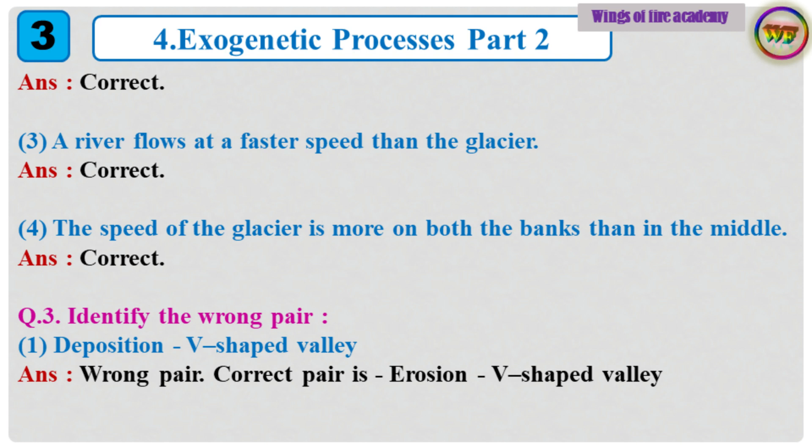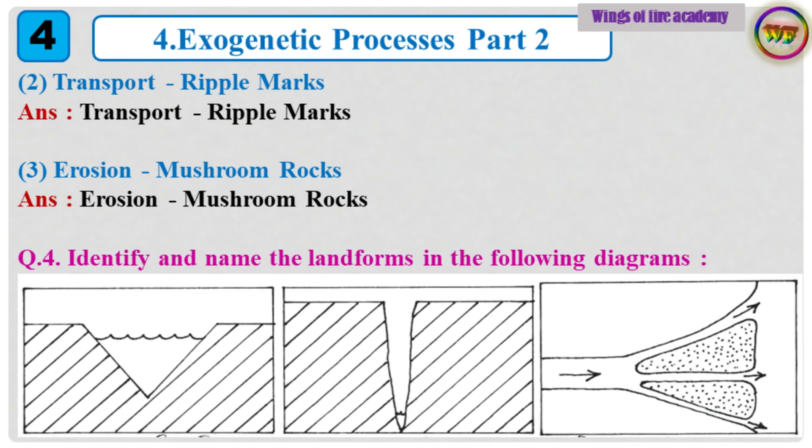Question 3: Identify the wrong pair. 1. Deposition — V-shaped valley. Answer: Wrong pair. The correct pair is Erosion — V-shaped valley. 2. Transport — Ripple marks. Answer: Transport — Ripple marks. (Correct pair.) 3. Erosion — Mushroom rocks. Answer: Erosion — Mushroom rocks. (Correct pair.)